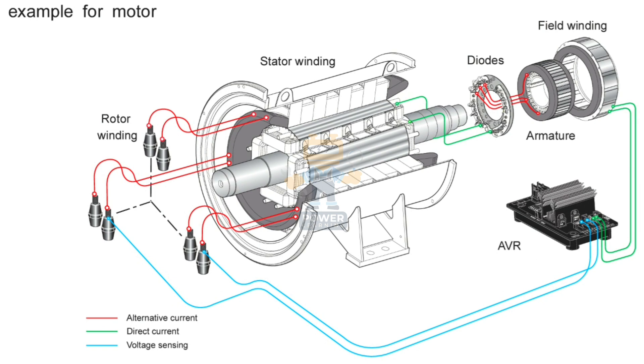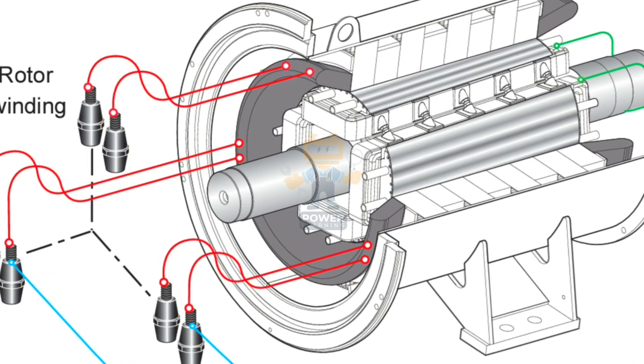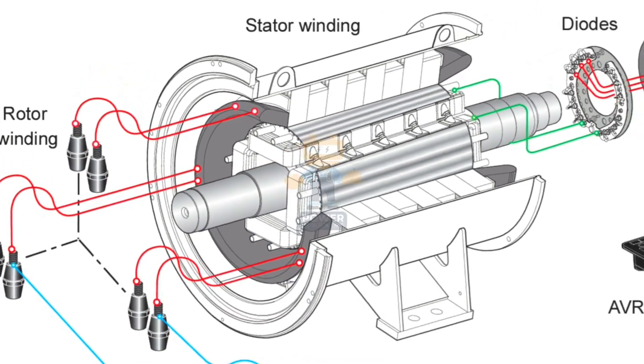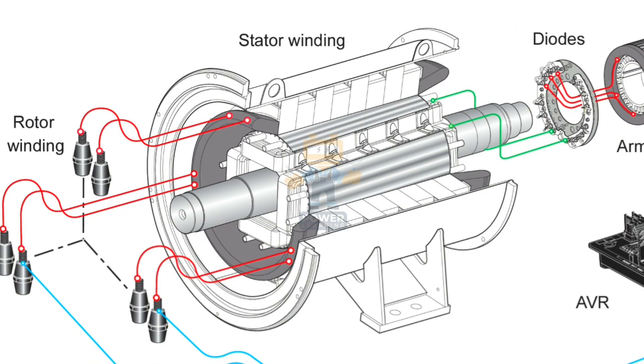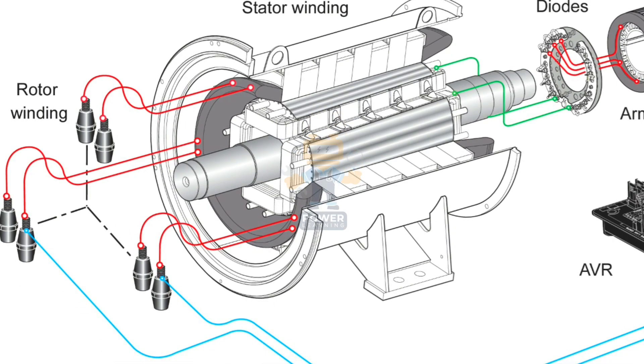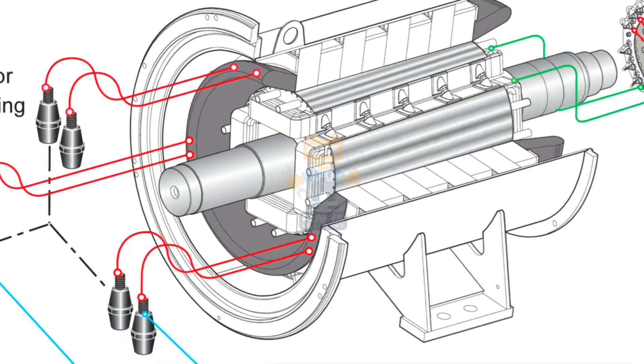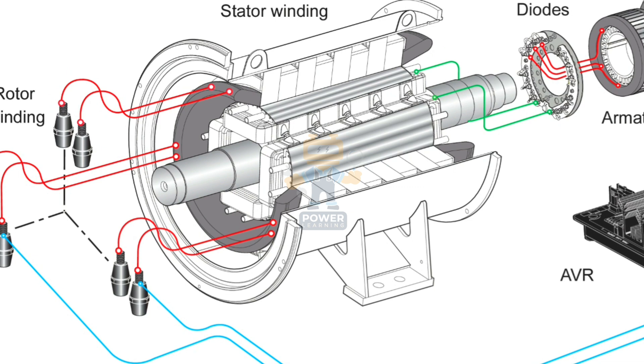In three-phase alternators, we have major things. First, we have stator winding and rotor winding. If you see this gray color, this is the stationary part called stator winding. These red wires show the stator windings which are located inside the housing of stator. This part is called stator.